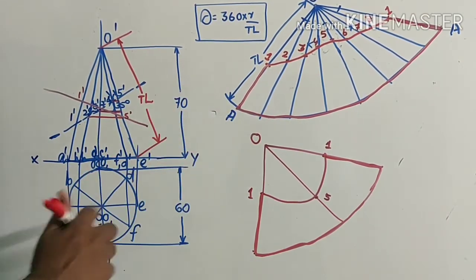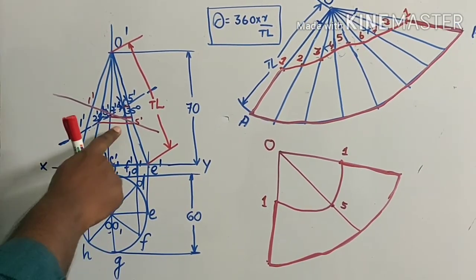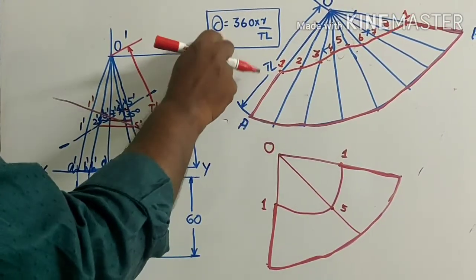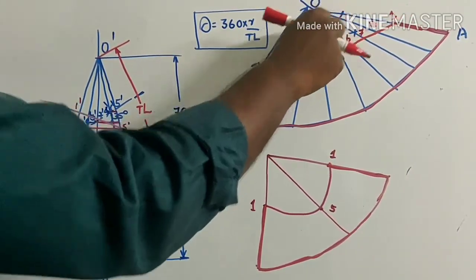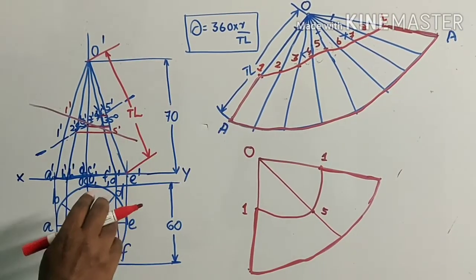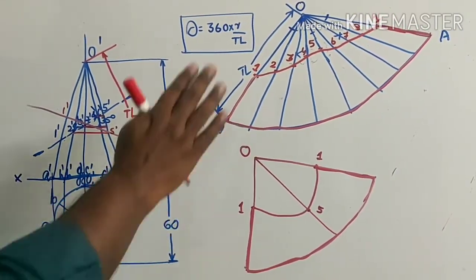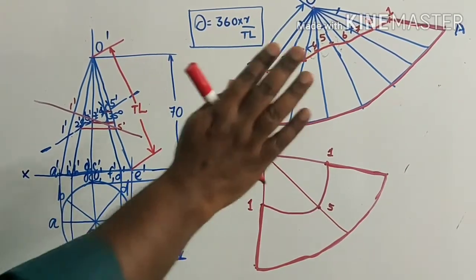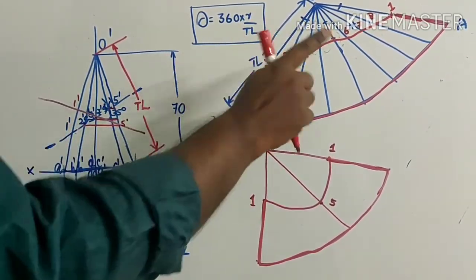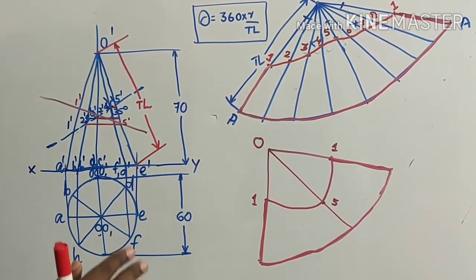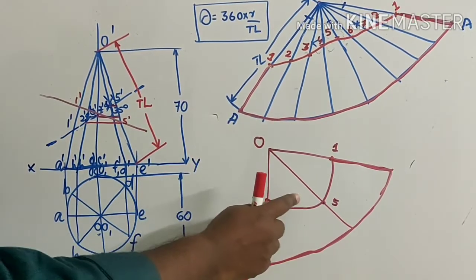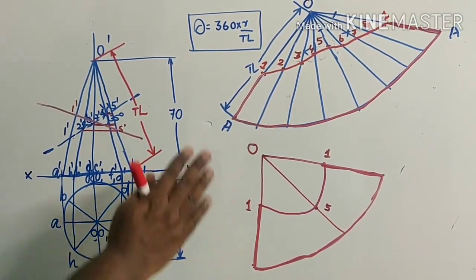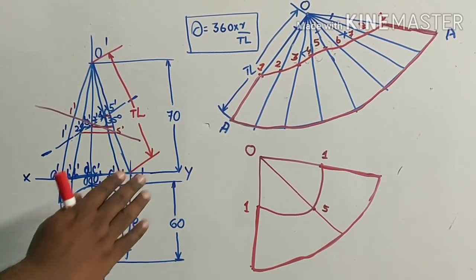To summarize: we started with the top view, drew the front view, then drew the section. After that we drew the development using the formula theta equals 360 times R divided by L to get the sector angle. Based on that we drew the development and divided the sector into 8 equal parts using angular bisectors. Then we transferred all the points to the development and drew the section curve. We also saw that if the section is taken in the opposite direction, the development of the section appears in the opposite direction. You can practice this. Thank you very much.